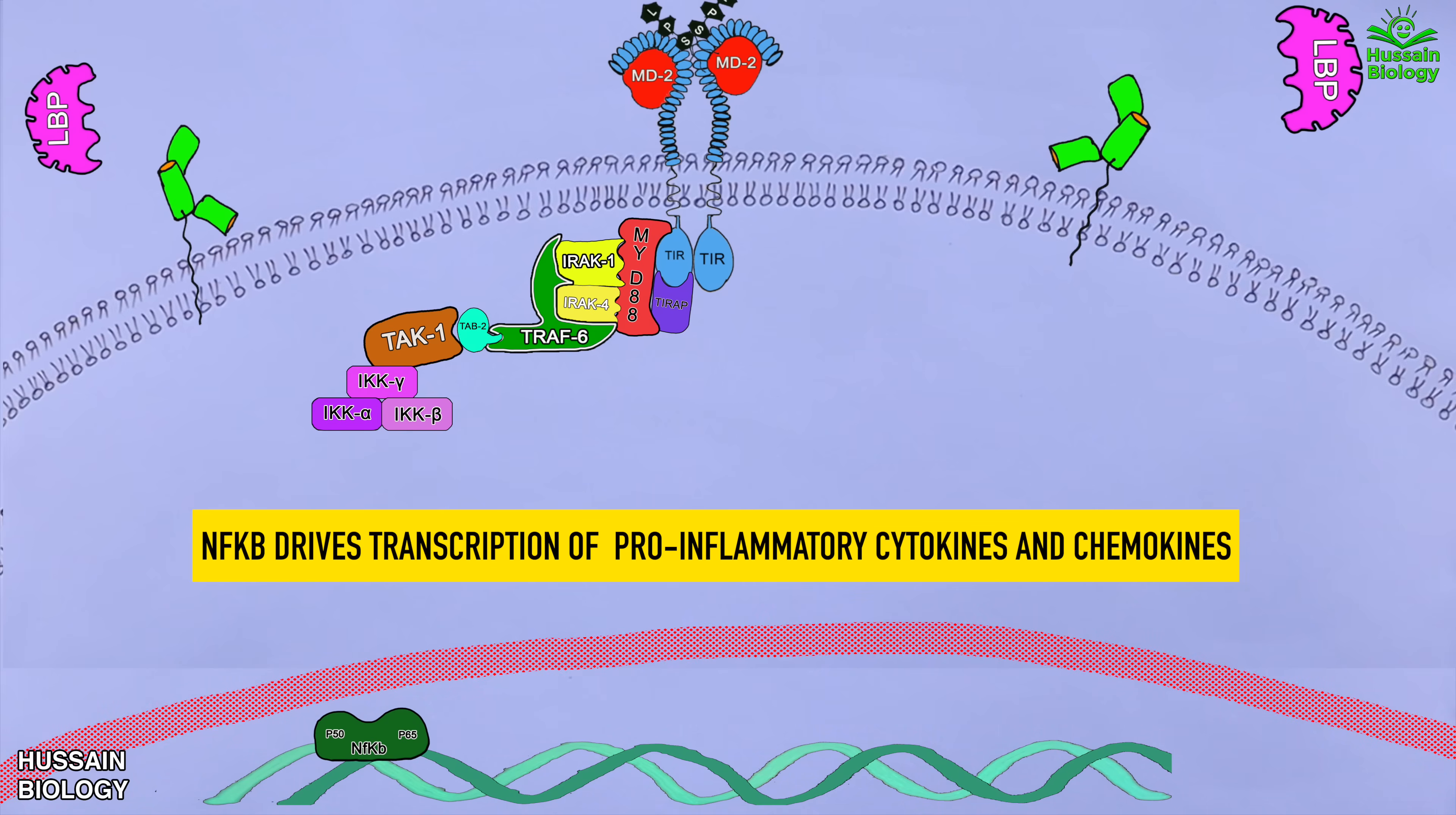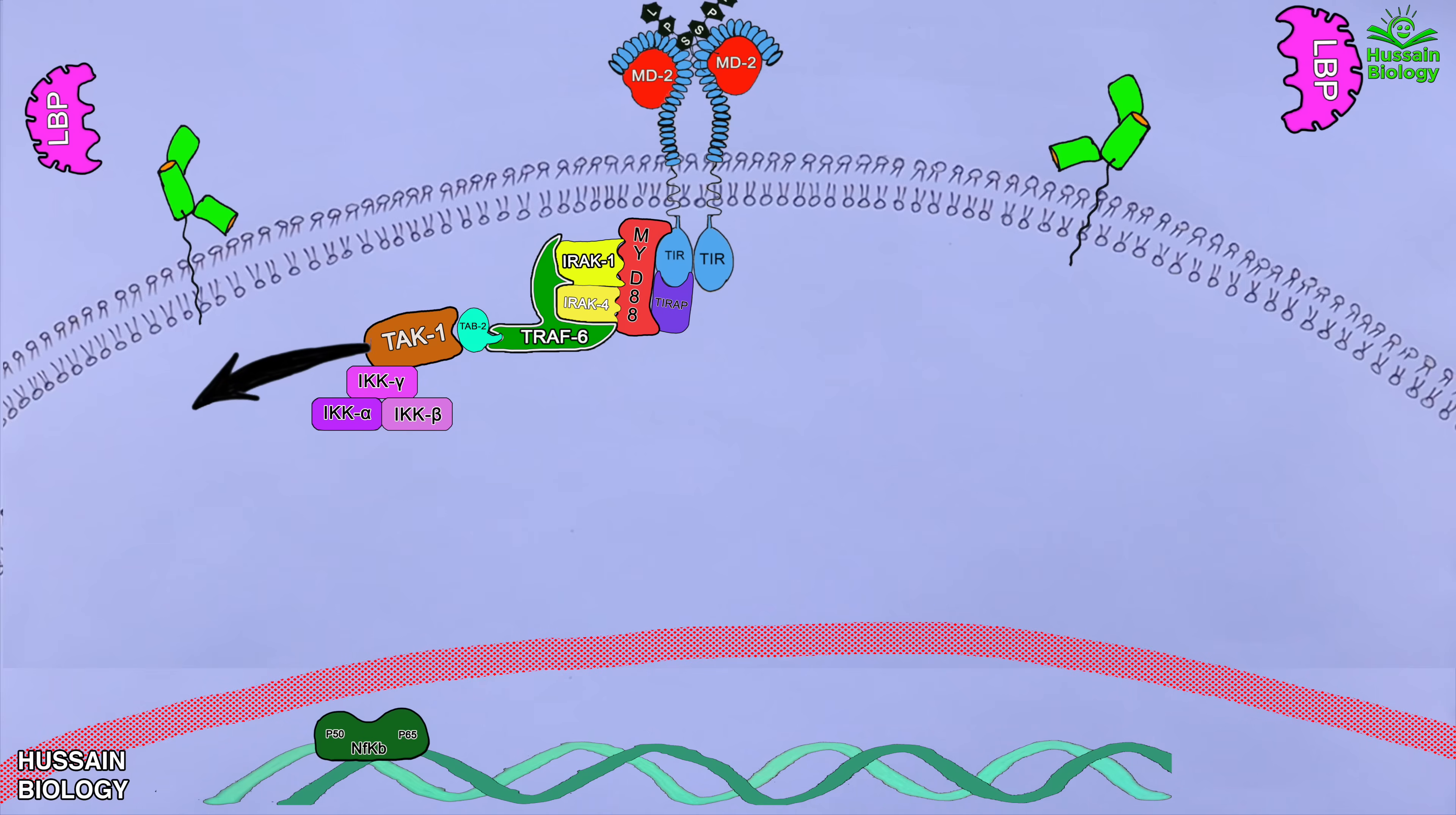Furthermore we have another signaling branch coming from TAC1 protein. As you can see in this diagram this TAC1 protein activates the MAPKs which in turn activates JNK protein and this JNK ultimately phosphorylates and activates the AP1 transcription factor which gets into the nucleus and drives the transcription of pro-inflammatory cytokines and chemokines.